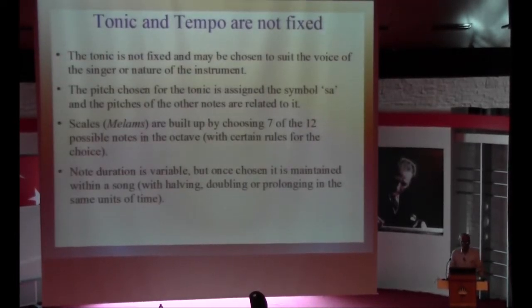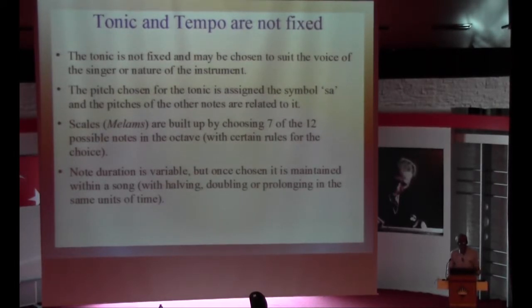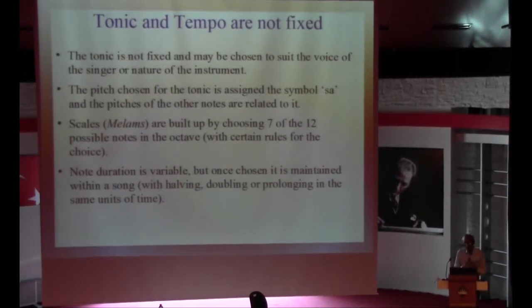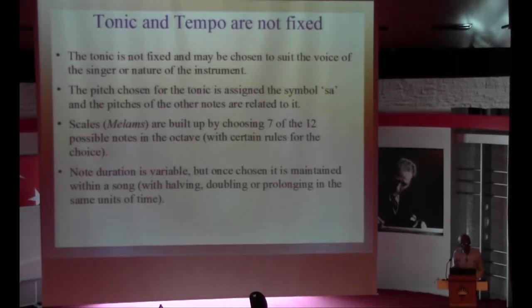The tonic is not fixed at all — same as North Indian classical music. Mostly gents take C as the tonic, ladies take G as the tonic, but there will be a lot of variations. Once you choose that frequency for the tonic, it is sa — whatever it may be, whether it is C or G, it is always sa. We don't actually define flat and short notes; how the scale is built is based on what is called the Melam system where a number is given, and from the number you can work out what notes are coming. Only when there is an accidental note coming, we put a star to show it is different.